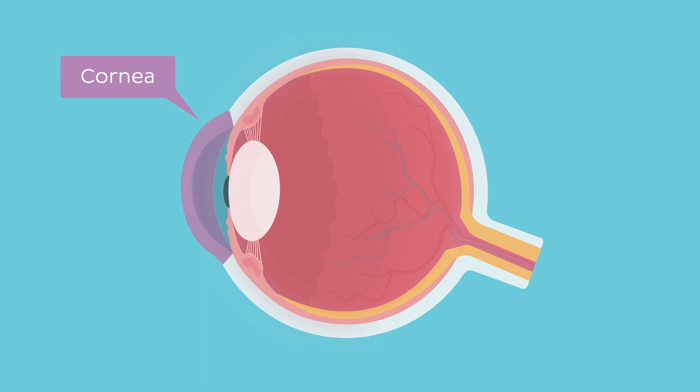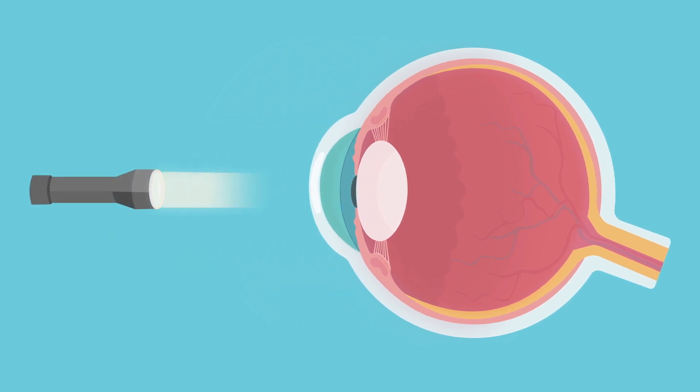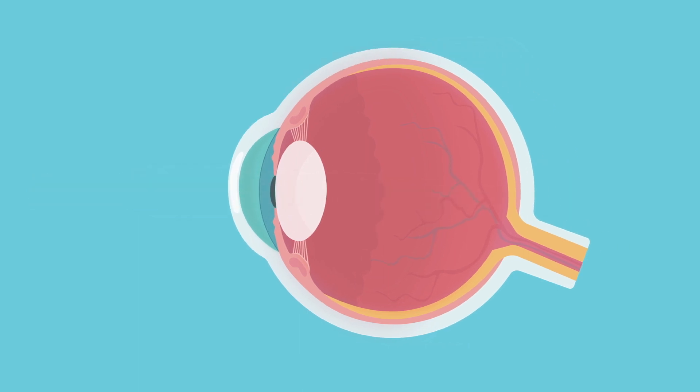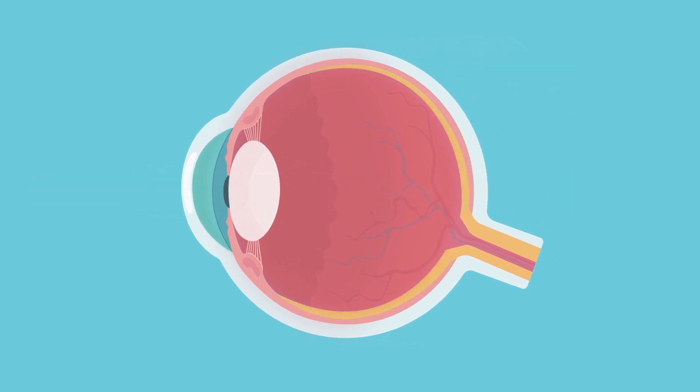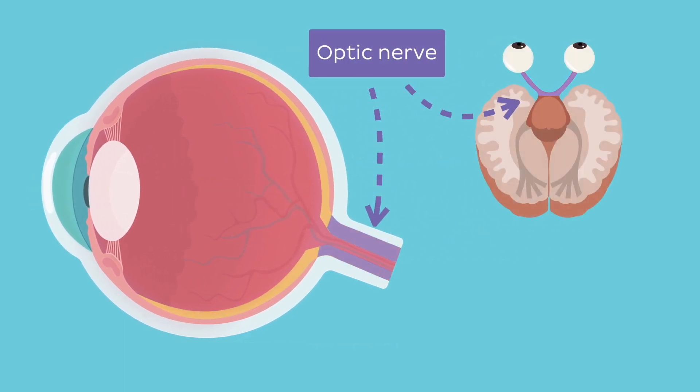The cornea is a transparent, dome-shaped structure in the anterior aspect of the eye, while the pupil is an aperture that allows the light to actually enter the eyeball. The image formed in the retina then travels through the optic nerve to the posterior part of your brain, where it is interpreted and recognized.